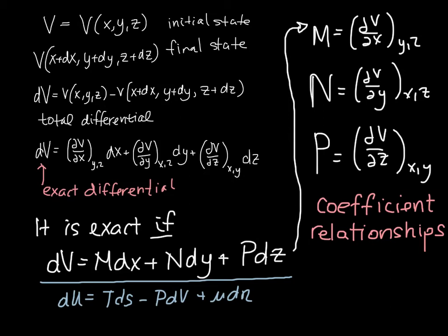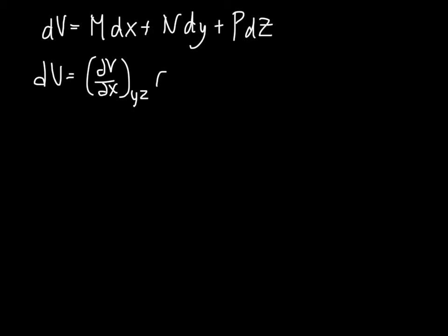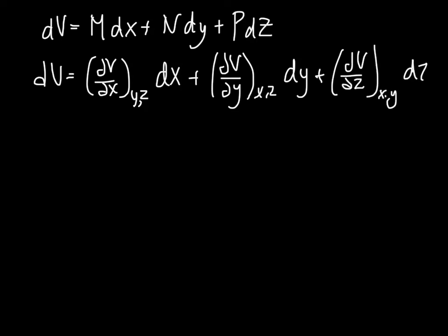There is one more property of these exact differentials of state functions that is worth looking at. So let's rewrite this again. We had that dV is either two ways, M dx plus N dy plus P dz or the total differential. So there is one more relationship that holds true if V is an exact differential, and that is that the order of second derivatives doesn't matter.